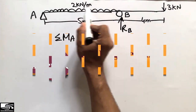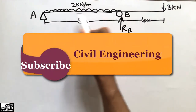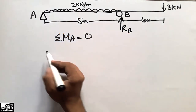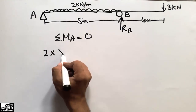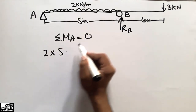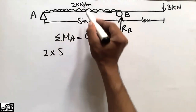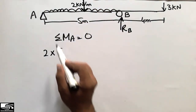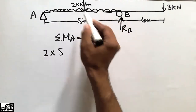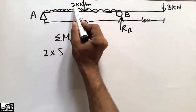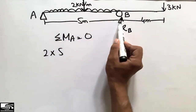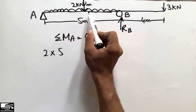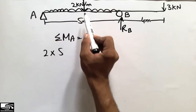The first load is the two kilonewton per meter UDL. To find its resultant, we multiply: two into five gives ten. So a ten kilonewton concentrated load acts at this point. This is how we convert a uniformly distributed load into a concentrated load — multiply the UDL by the distance to get the resultant, which acts at the center of that span.